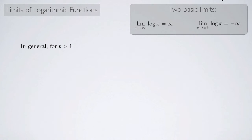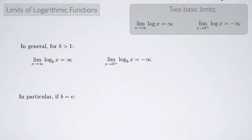Using this idea, we can look at our two basic limits in general. For a base b greater than 1, the limit as x approaches infinity of log base b of x is infinity, and the limit as x approaches 0 from the right of log base b of x is negative infinity. In particular, if the base is e, then we have the natural log: the limit as x approaches infinity of ln(x) is infinity, and the limit as x approaches 0 from the right of ln(x) is negative infinity.